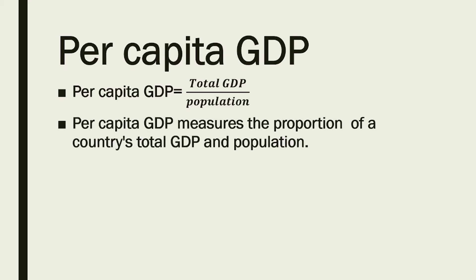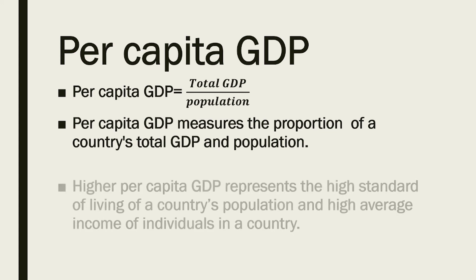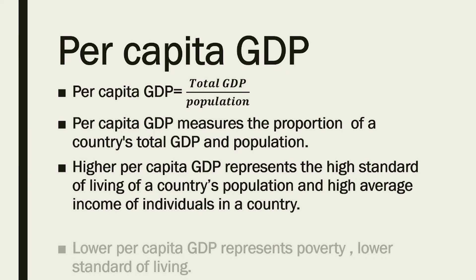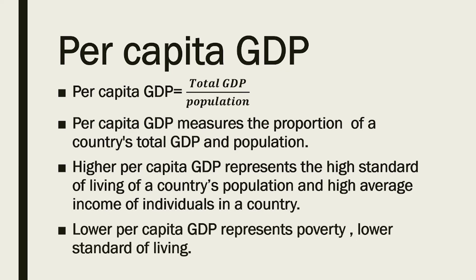Per capita GDP measures the proportion of a country's total GDP relative to its population. Higher per capita GDP represents a high standard of living and high average income of individuals in a country. Lower per capita GDP represents poverty and a lower standard of living.